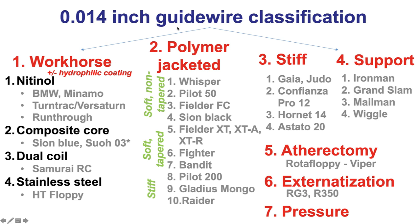The second major category are the polymer-jacketed wires — wires that have a full-thickness coating, so very slippery wires. These can be subcategorized into the soft non-tapered, such as the Whisper, Pilot 50, and Fielder FC or Black, commonly used to advance through tortuosity or in side branches during bifurcation PCI. There are also the soft tapered wires like the Fielder XT, Fighter, and Bandit, which are the initial choice for antegrade CTO wiring for many operators. And then there are the stiff polymer-jacketed wires such as the Pilot 200, Gladius, Mongo, and Raider, which are used for more complex lesions, also often in CTO PCI.